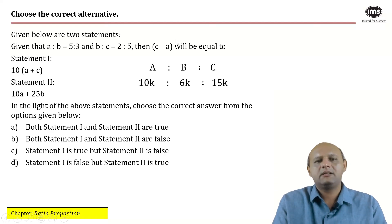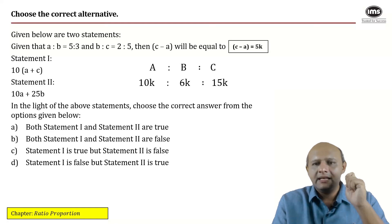So we've already concluded that a is to b is to c in terms of ratios would be 10 is to 6 is to 15. So c minus a in turn would be 5k. In light of this statement, we have to evaluate the two statements for their appropriateness.